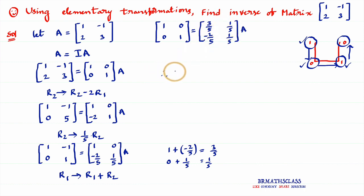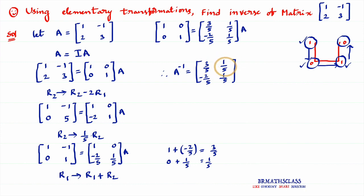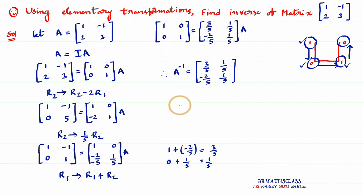Whatever matrix is present here is the inverse of the given matrix. Therefore, A inverse equals [3/5, 1/5; −2/5, 1/5]. I hope you understand this class. If you want me to do one more video on finding the inverse by using elementary transformations, please comment below. If you like this video, please drop a like and share it with your friends. If you are not yet subscribed to my channel, please subscribe now. Thanks for watching. Have a great day. Bye-bye.